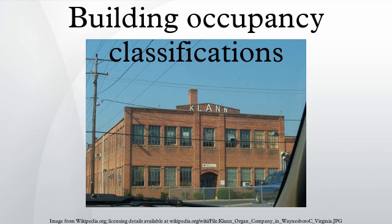High hazard: places involving production or storage of very flammable or toxic materials, including places handling explosives and/or highly toxic materials. Institutional: places where people are physically unable to leave without assistance. Examples include hospitals, nursing homes, and prisons.